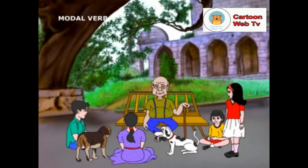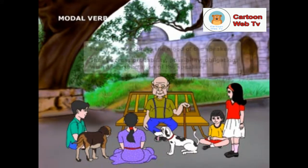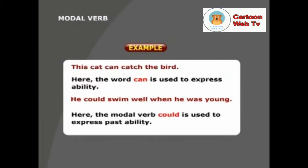Grandpa, what are modal verbs? Modal verbs express the mood of the speaker. They express probability, possibility, obligation, wish and expectation of the speaker. The following examples will show how modal verbs express the mood of the speaker. This cat can catch the bird. Here, the word 'can' is used to express ability. He could swim well when he was young. Here, the modal verb 'could' is used to express past ability.